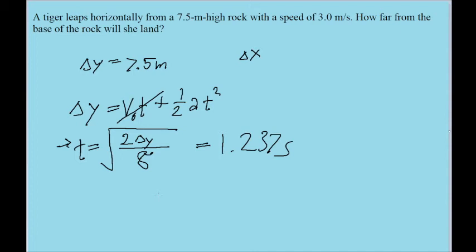So the whole time that the tiger is falling, they're moving in the horizontal direction at a constant speed, basically. And that constant speed is given to us as 3.0 meters per second.